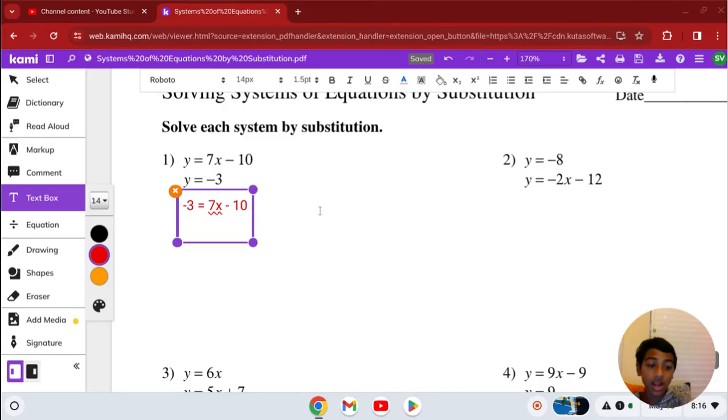Now we can solve this equation. We already know how to solve equations. Add 10 to both sides, giving us 7 equals 7x. Then we divide both sides by 7, giving us x equals 1.